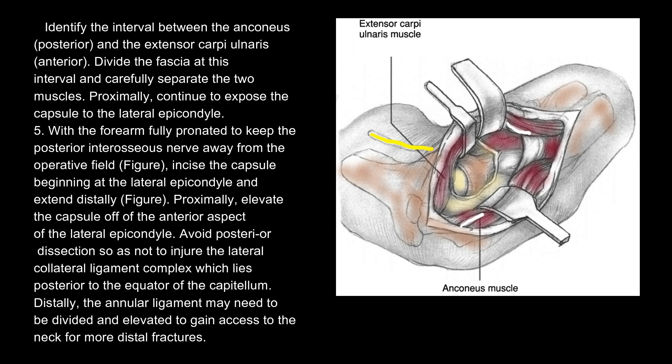10. Proximally, continue to expose the capsule to the lateral epicondyle. 11. With the forearm fully pronated to keep the posterior interosseous nerve away from the operative field, incise the capsule beginning at the lateral epicondyle and extend distally. Proximally, elevate the capsule off the anterior aspect of the lateral epicondyle. 12. Avoid posterior dissection so as not to injure the lateral collateral ligament complex, which lies posterior to the equator of the capitellum. Distally, the annular ligament may need to be divided and elevated to gain access to the neck for more distal fractures.